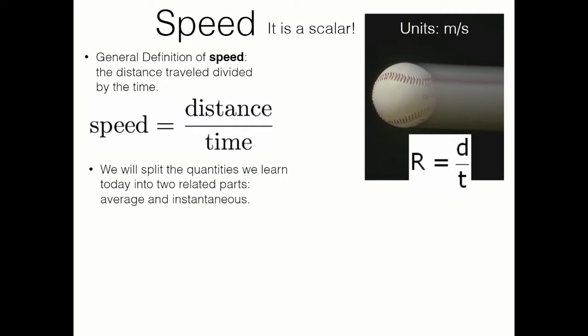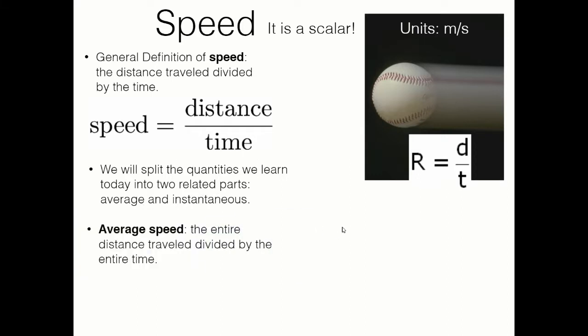Every time I define a quantity in this lesson, I'm going to split it into two categories: average value and instantaneous value. So now we're going to look at average speed. As we know, the speed during a trajectory or some event can change. The average speed would be the entire distance divided by the entire time, so it completely ignores all of those changes because it's just looking at the beginning and end. The line over the speed symbol stands for average when placed over a quantity's symbol.